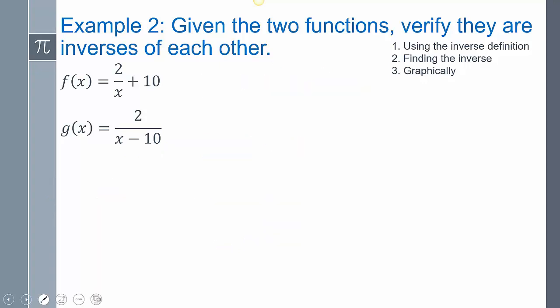Now, we're going to find the inverse. So I can just take this problem right here and find the inverse of it. So switch the x and y's. Get it by itself. So I'm going to get this y by itself. So I'm going to minus 10 on both sides.